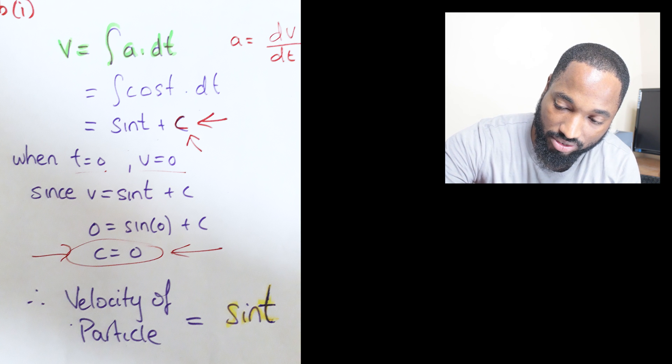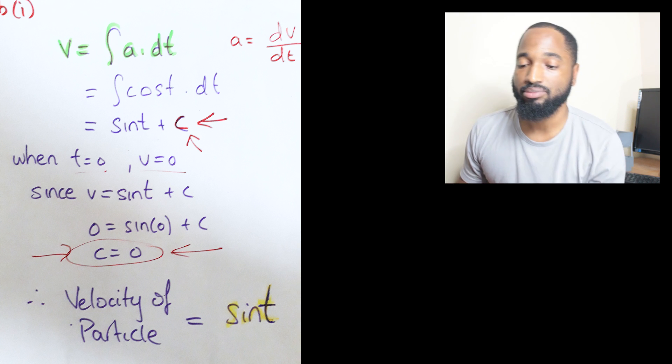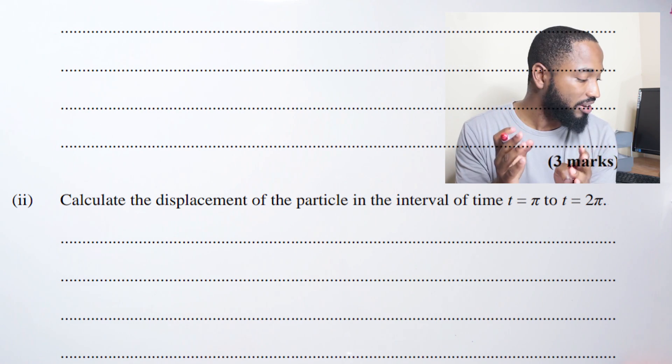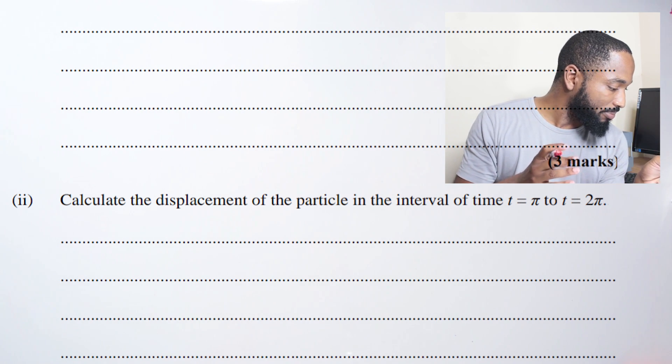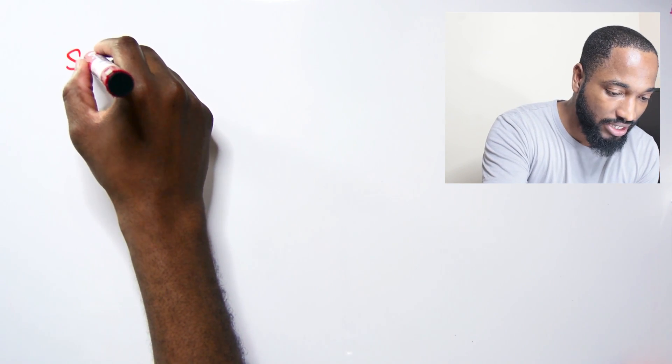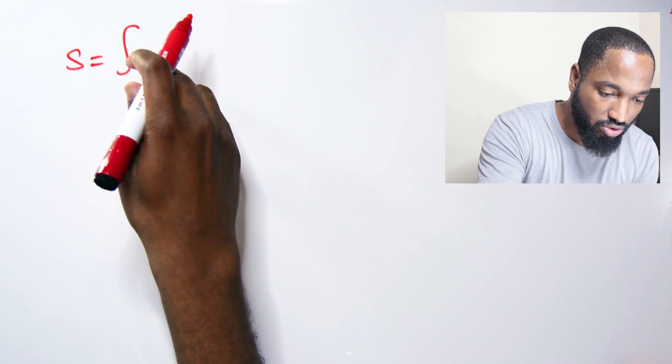We're down to the last part of the question. We're asked to calculate the displacement of the particle in the interval from t equals π to t equals 2π. When you see π you're dealing with radians. You need to recall that to find displacement we have to integrate velocity.